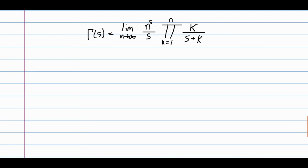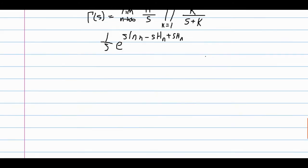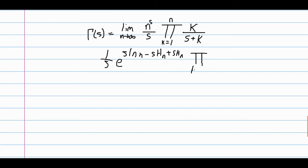All we have to do is a few lines of manipulations. Remember that I'm keeping the limit here — I'm just not going to write it. So we have 1 over s. Then n to the s I'm going to turn into e to the s ln of n. In the same exponent I'm going to subtract s times the nth harmonic number plus s times the nth harmonic number — I'm essentially adding 0. Here we have the product from k goes from 1 to n, and I'm going to flip the fraction by taking the reciprocal to the negative 1 power, and we'll get 1 plus s over k.